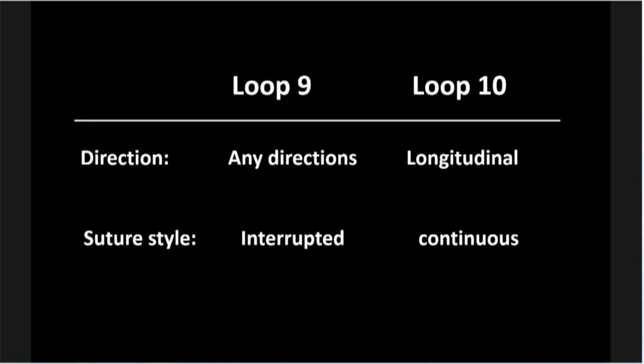Loop nine versus loop ten — several characteristics: Loop nine can be applied to any direction, whether coaxial or transverse. It is like interrupted suture, one by one. Loop ten is good to apply to longitudinal incision, using a coaxial maneuver — it is like a continuous suture.